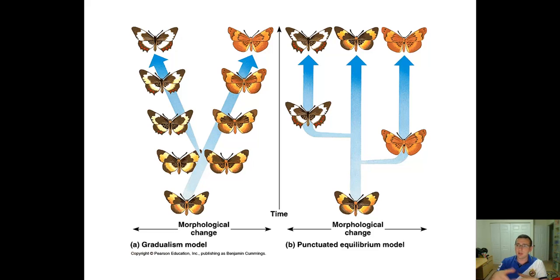But it can also happen slowly over long periods of time by separating two different populations and then successive small changes accumulated over long periods of time.